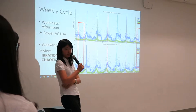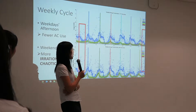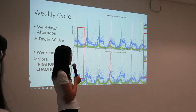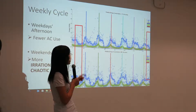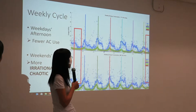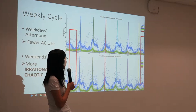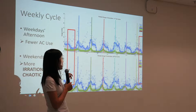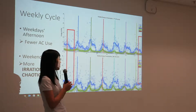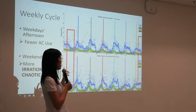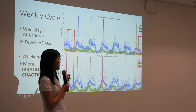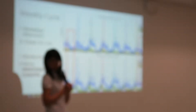Here is the chart about the weekly cycle. The upper part is about the 11th floor and the lower part is about the 24th floor. We can see that especially on Saturday and Sunday, there is less pattern and the data is generally randomly distributed.